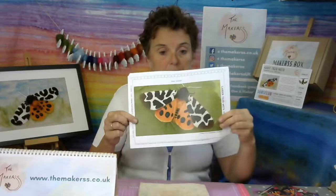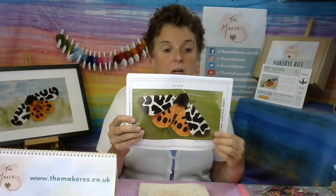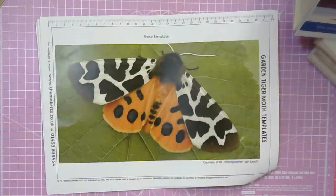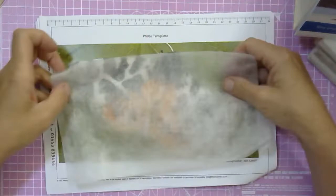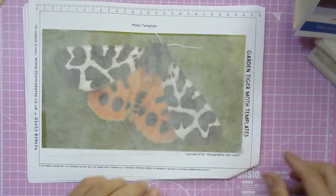First, you need to use the template in the instructions, which is the picture of the tiger moth. That picture is there to help you know where to put the spots and markings. You need to use it to draw your outline of the body onto the water-soluble paper fabric that comes in the box. For this you will need a pencil.